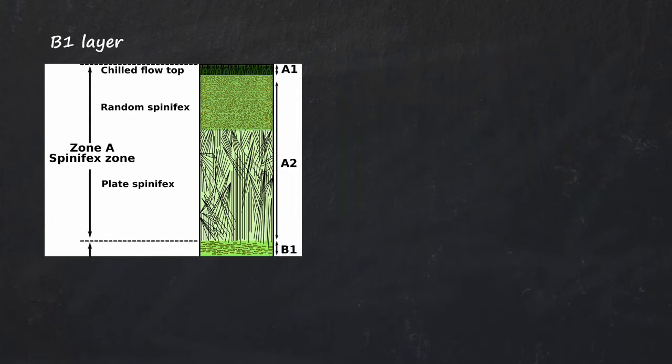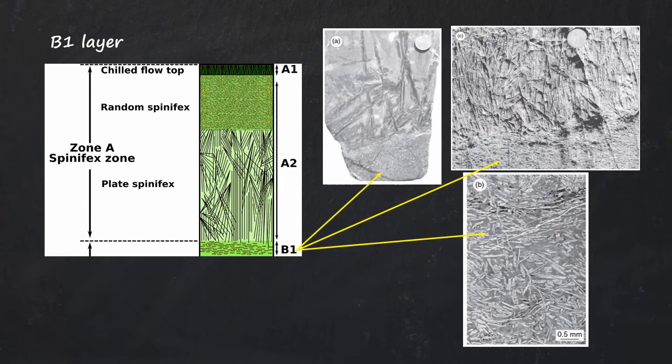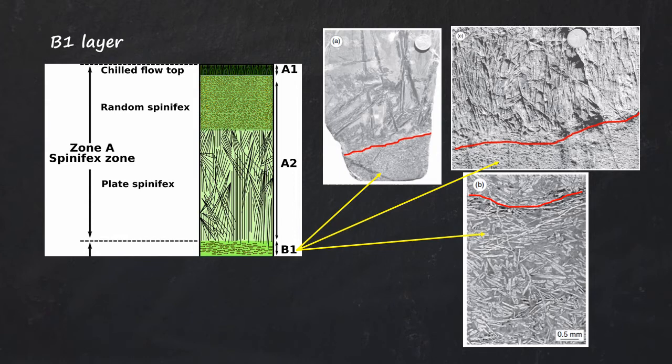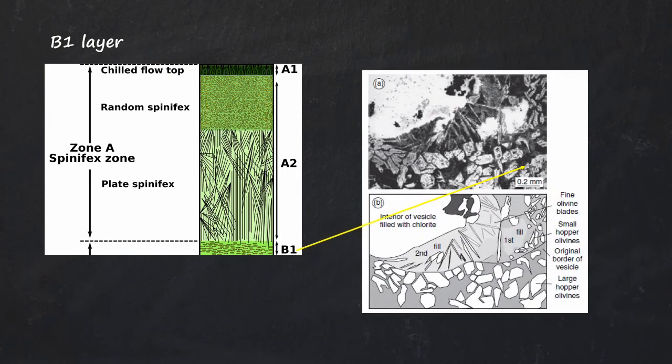The B1 layer. The spinifex layer on top and the bottom B1 layer shows a sharp contact. This layer is not necessarily present but they comprise elongate hopper olivine phenocrysts having firm preferred orientation that is parallel to the flow margins. The phenocrysts is within pyroxene glass matrix and lower contact grades into solid polyhedral grains accompanied by change in preferred orientation.